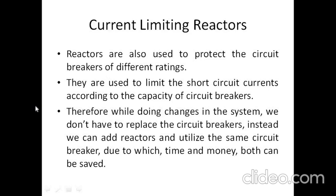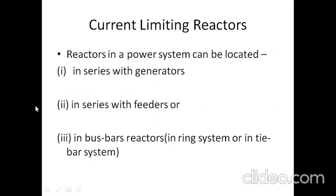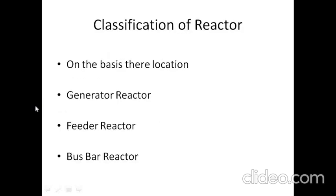We can utilize the same circuit breaker just by adding reactors in the system, saving both time and money for installation and maintenance. Reactors in the power system can be located in different positions: connected in series with the generator, in series with the feeder, or as bus bar reactors. According to their location, the type of reactor system is identified.